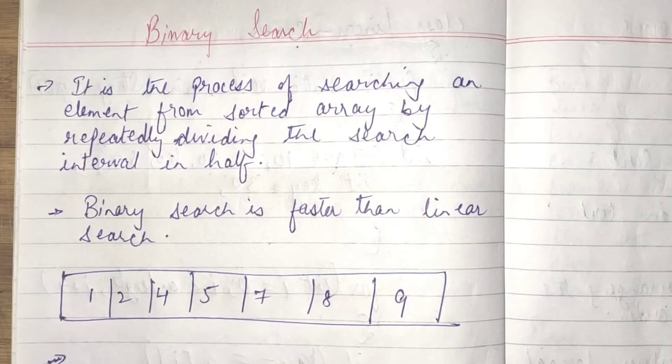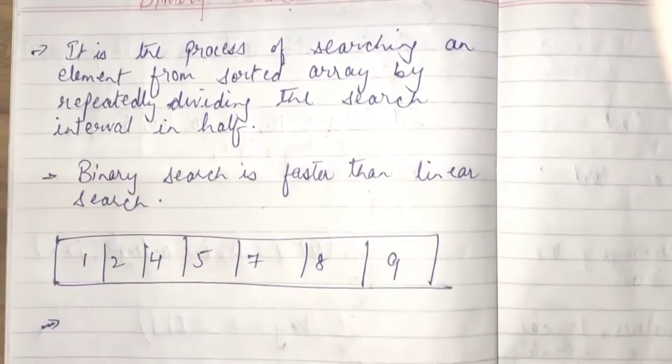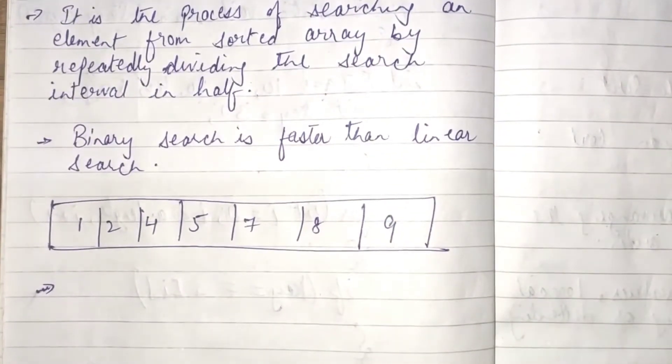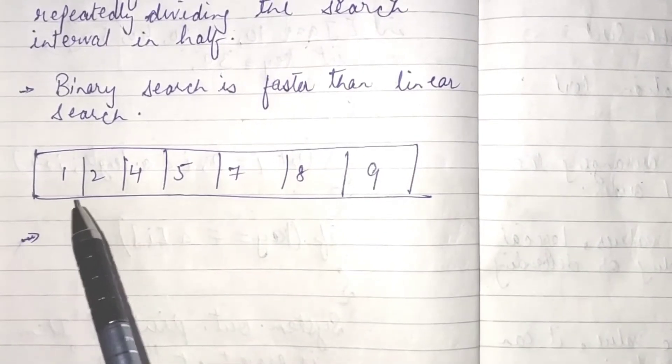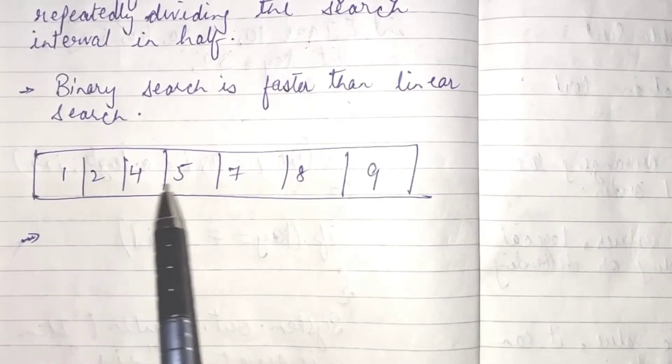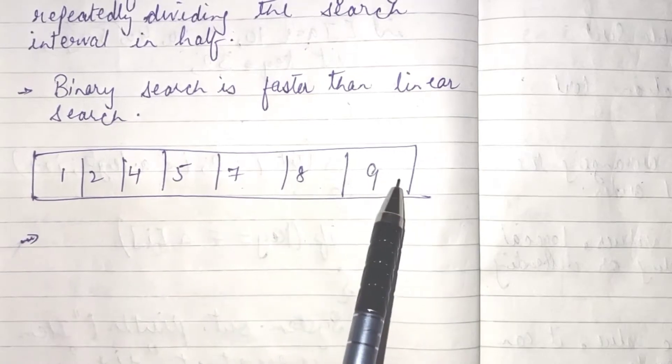There is only one limitation in a binary search that binary search can be performed only on sorted list of array. Let's check this list here. We already have one sorted list where the elements are 1, 2, 4, 5, 7, 8, 9.